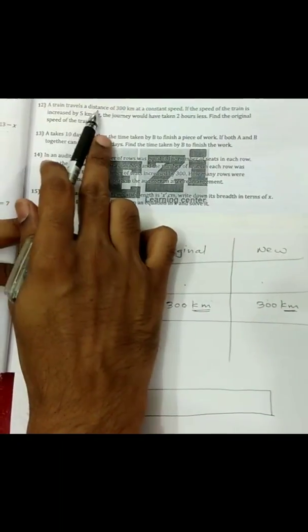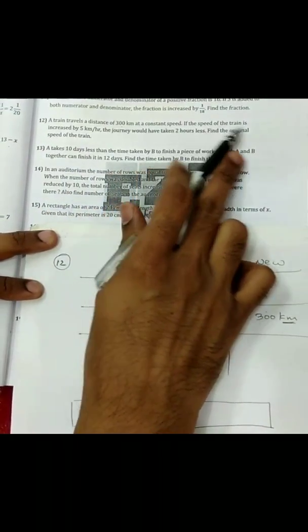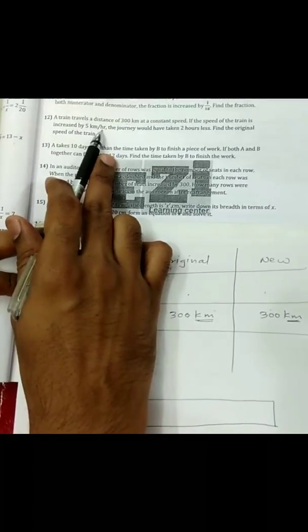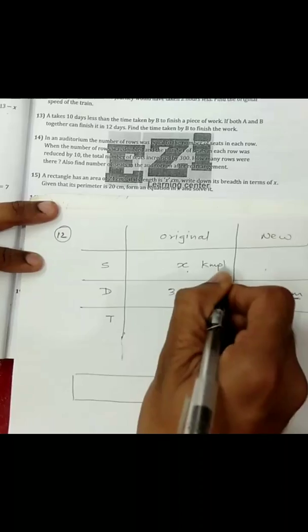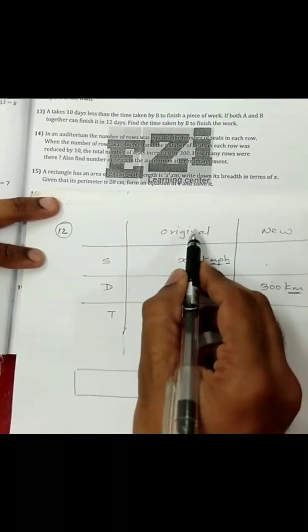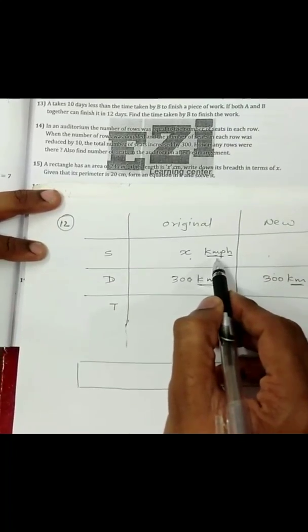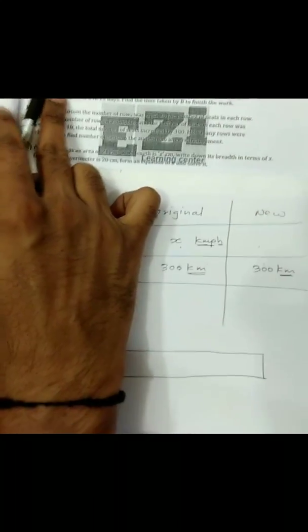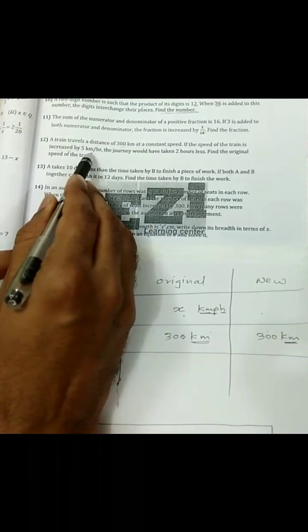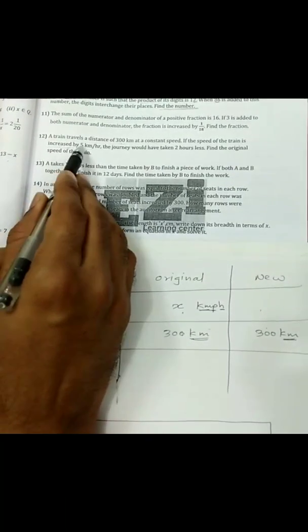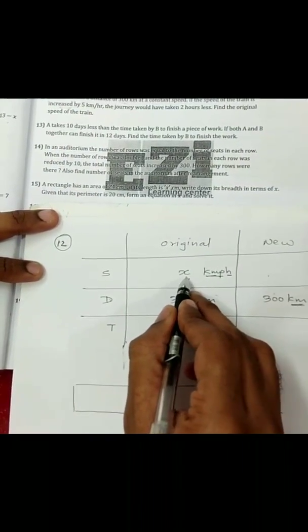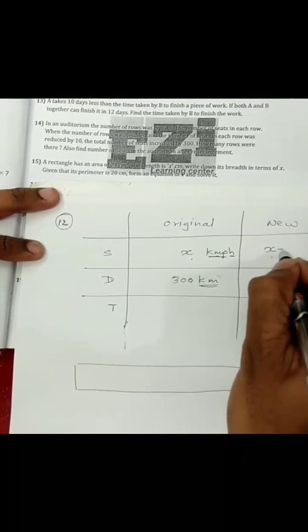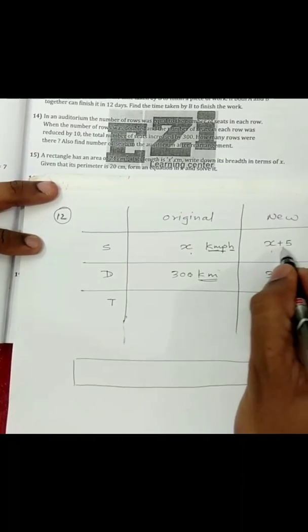At a constant speed, the train travels 300 km. If the speed is increased by 5 km per hour — we are going to find the original speed. So, let the speed of the train be x kmph, that is km per hour. Let the original speed be x km per hour. In the new case, since the speed is increased by 5, the new speed becomes x plus 5. If it were decreased by 5, you'd write x minus 5.